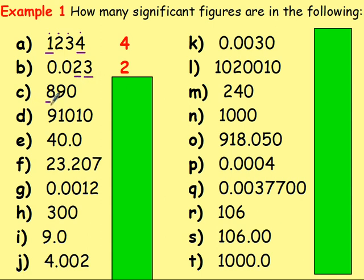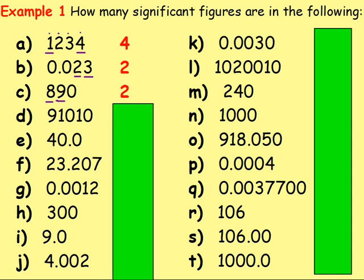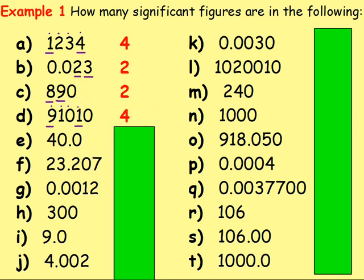With the next one, start at the first number that is not a 0. It ends before the decimal, so count up to the last number that is not a 0, which is the 9. There are 1, 2 significant figures. With D, the first number that is not a 0 is the 9. It ends before the decimal point, so we count up to the last number that is not a 0. So there's the first significant figure and there's the last, with 2 numbers between, which means we have 1, 2, 3, 4 significant figures. With the next one, the first number that is not a 0 is the 4. It ends after the decimal point, so we go up to the last digit, even if it's a 0. So there's the first and the last, which means we would have 1, 2, 3 significant figures.